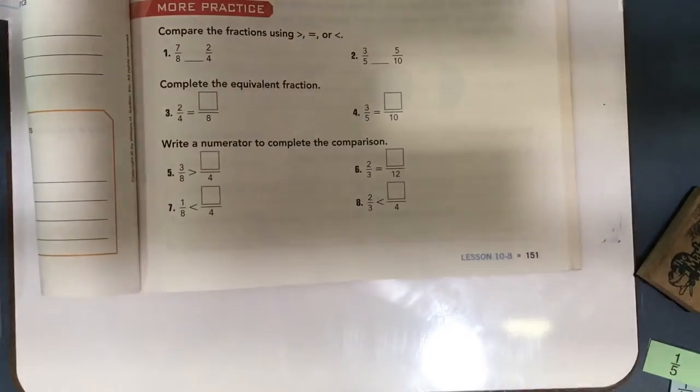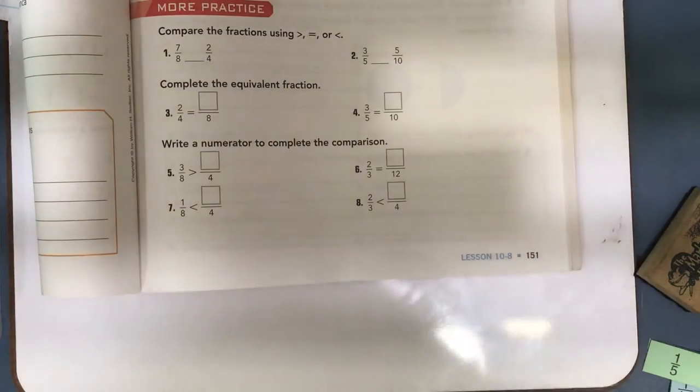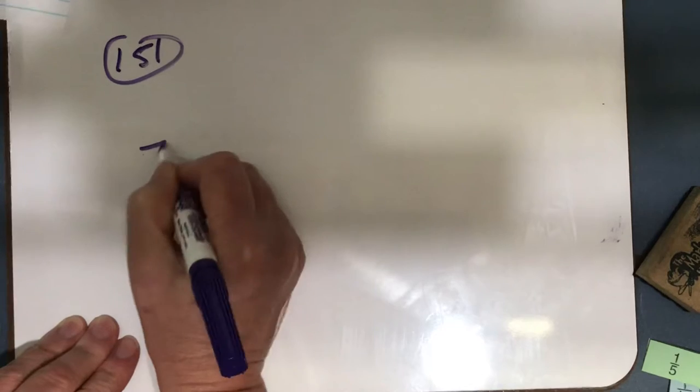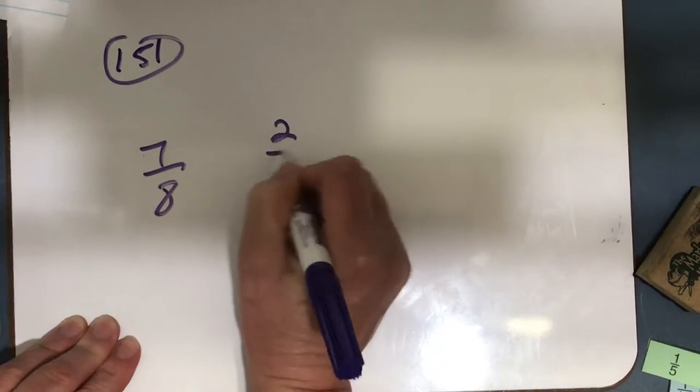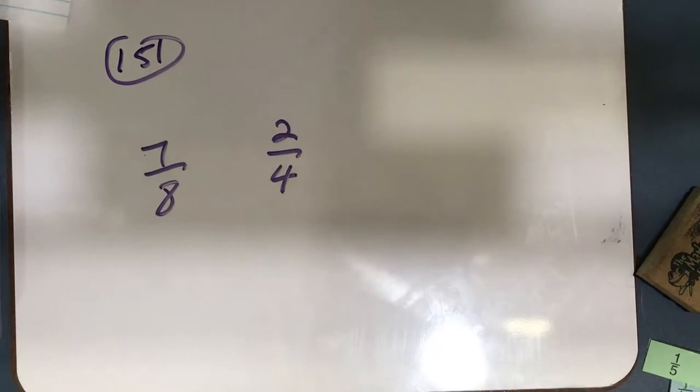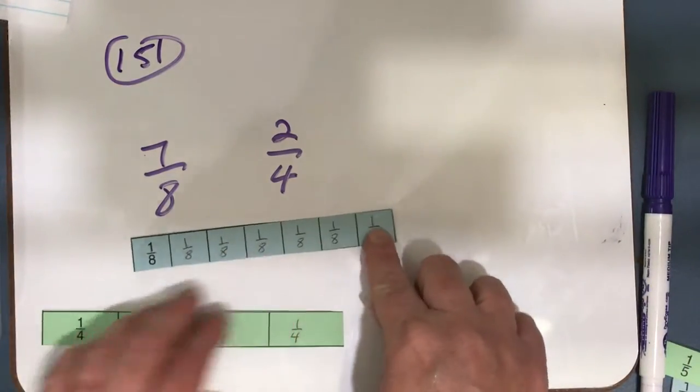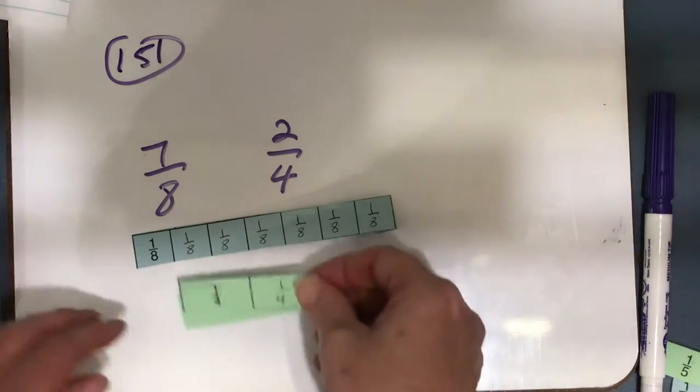Look at number one. We're going to compare 7 eighths to 2 fourths. So this is page 151, 7 eighths compared to 2 fourths, and we can do this two different ways. First, we can use fraction strips, and here's 7 eighths.